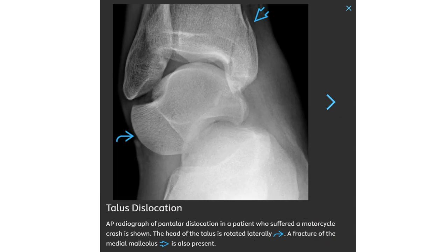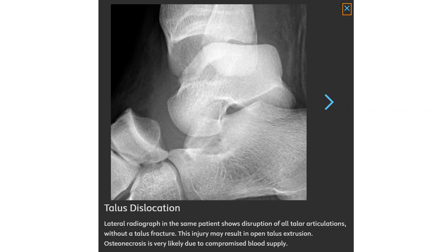An AP radiograph shows a pantalar dislocation in a patient who suffered a fall. The posterior subtalar joint is seen dislocated. The head of the talus is rotated laterally, and a fracture of the medial malleolus is also present. The lateral radiograph in the same patient shows disruption of all talar articulations without a talar fracture. This injury may result in open talar extrusion, and osteonecrosis is very likely due to compromised blood supply.